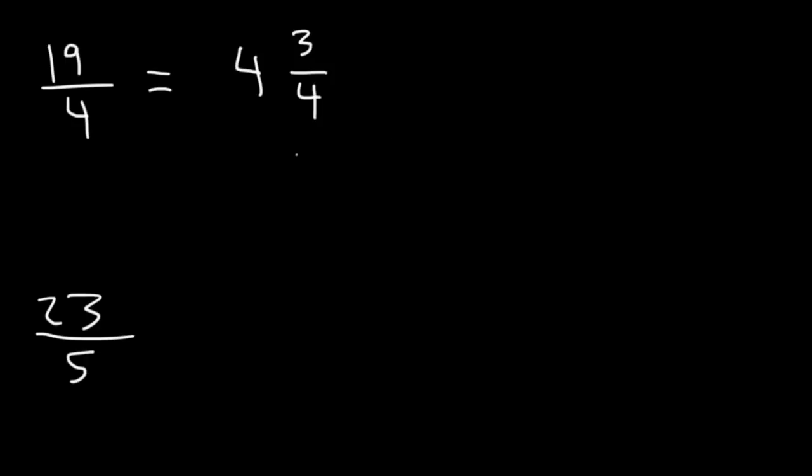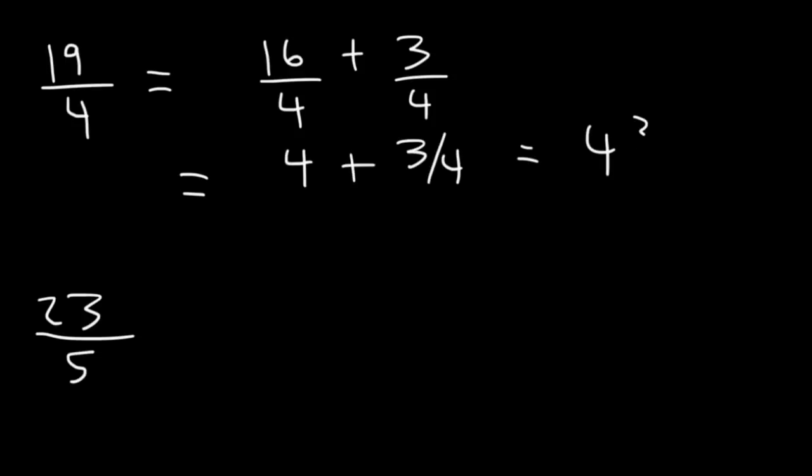So, it's 4 and 3 fourths. Or, you could do it this way. You can break up 19 into 16 plus 3, dividing each by 4. 16 divided by 4 is 4. 4 plus 3 fourths is 4 and 3 fourths.